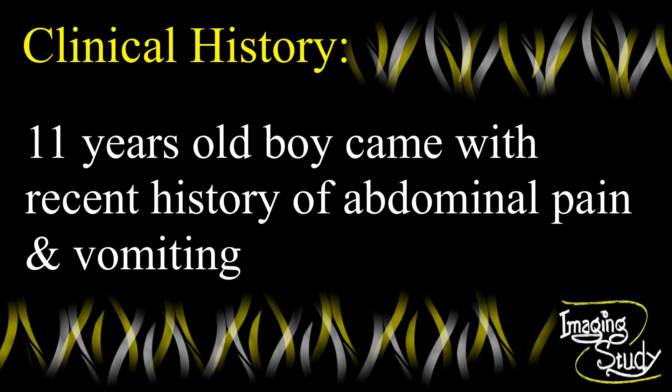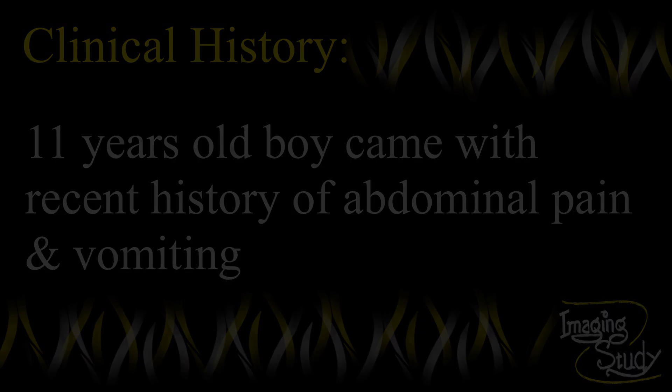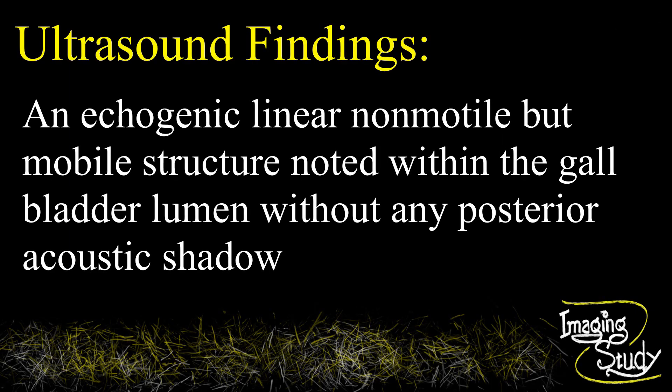An 11-year-old boy came with a recent history of abdominal pain and vomiting. On ultrasound, a linear echogenic structure is noted within the gallbladder lumen. It was non-motile and changed its position along gravity after the patient's posture changed.